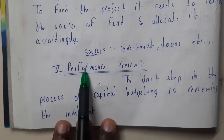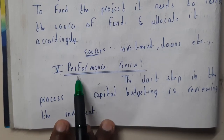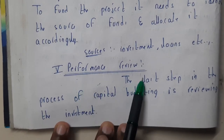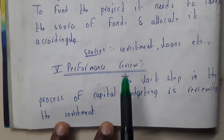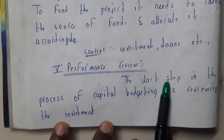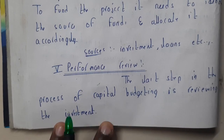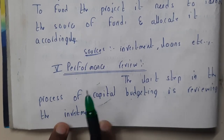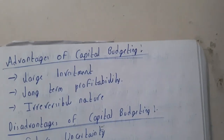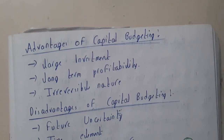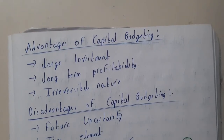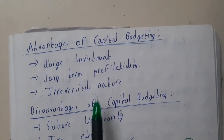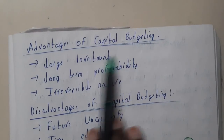The fifth step is performance review — the last step in which the process of capital budgeting is reviewed. Whatever you invested, you check whether you will get it back.